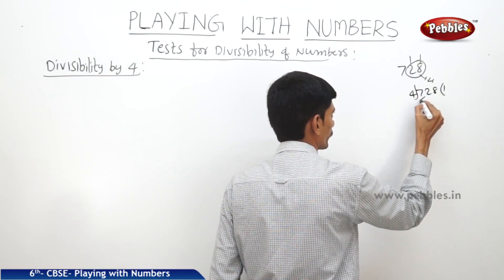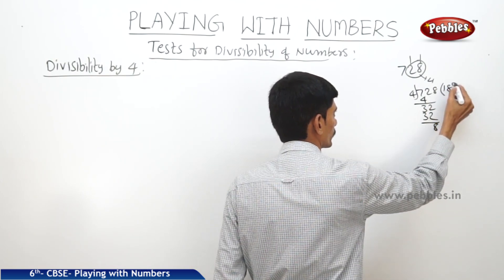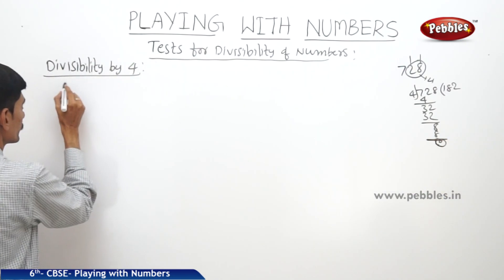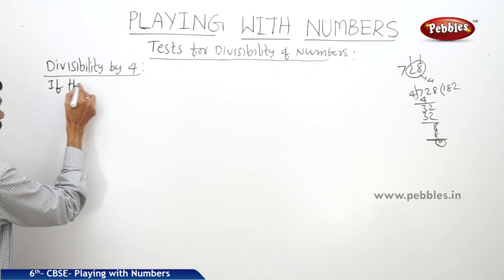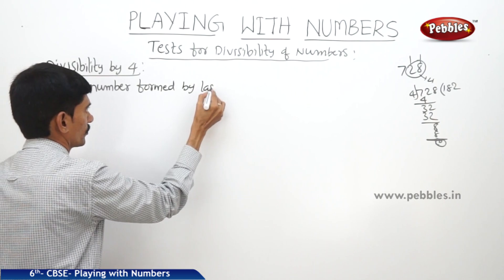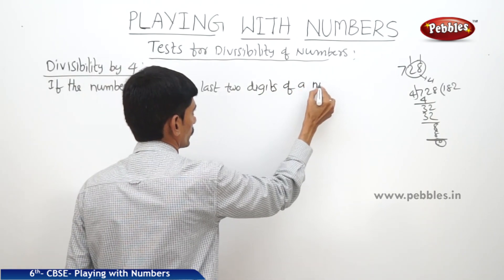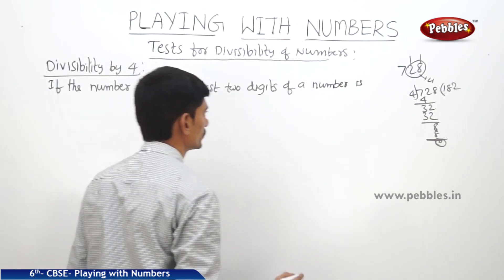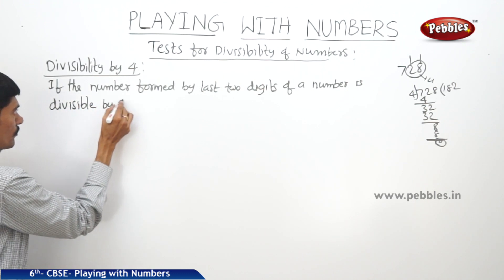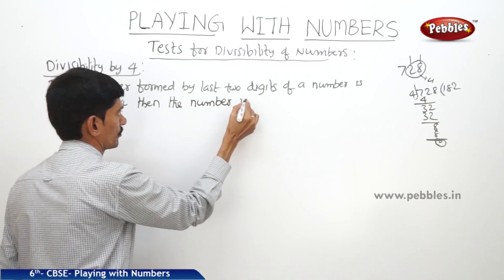Let us verify: dividing 728 by 4, we get 4 times 182 equals 728 with remainder 0. So it is divisible by 4. We can write the rule as: if the number formed by the last 2 digits of a number is divisible by 4, then the number is divisible by 4.